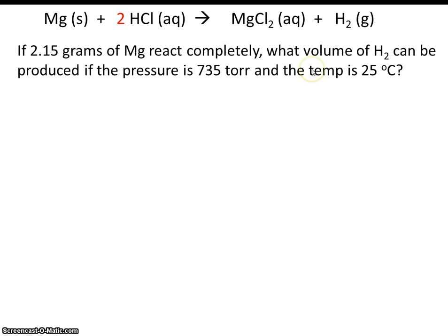Let's read this problem carefully. One area where students get tripped up is they're not sure what these numbers really represent. If 2.15 grams of magnesium react completely, what volume of hydrogen can be produced if the pressure is 735 torr and the temperature is 25 degrees C?